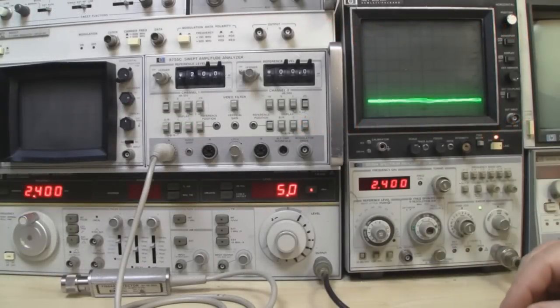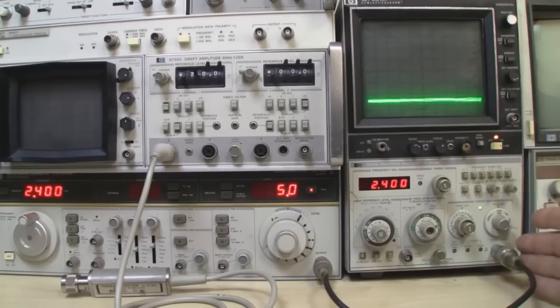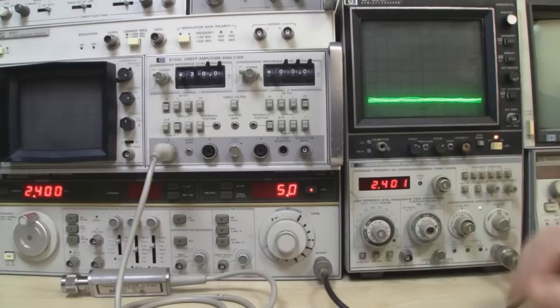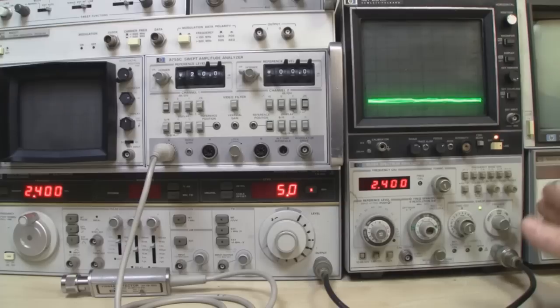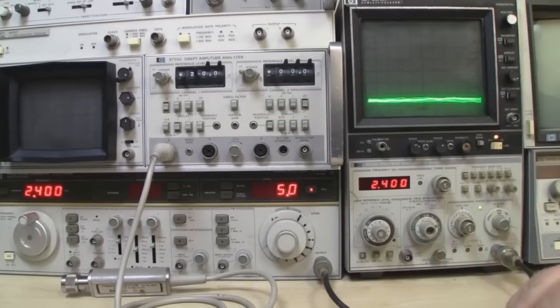So what I've got here then is my latest eBay purchase. It's a HP Spectrum Analyzer, the 8559A. This is getting on for over 30 years old now. But there's a few reasons why I actually picked this up. I was the only bidder on this and I got it for £50.